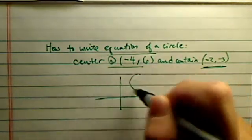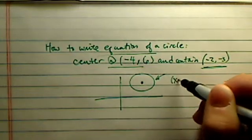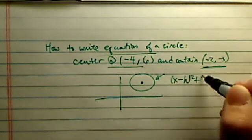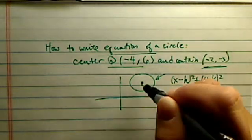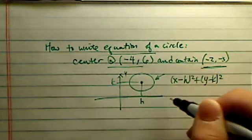If you remember, a center point for a circle equation-wise is x minus h squared plus y minus k squared, where h,k is over here. This is y, this is x.